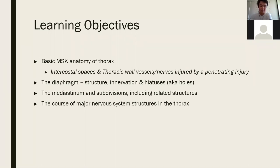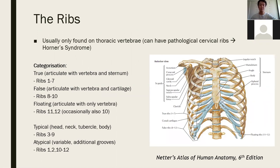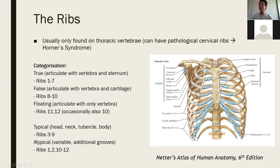Starting with the ribs — ribs are typically only found on thoracic vertebrae and there are 12 of them. You can sometimes have pathological cervical ribs, but you'll hear more about those next year. In terms of categorization, there are two systems: true, false, and floating; and typical and atypical. Ribs 1 to 7 are called true ribs because they all attach directly to the sternum at their anterior end, while all ribs originate from the vertebral bodies.